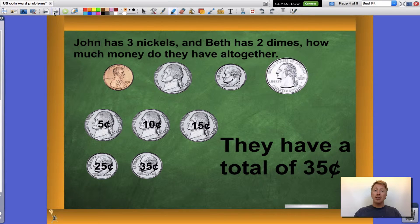So let's see what that would look like. If John has three nickels at five cents each, I have five, ten, fifteen, and when I add those to Beth's two dimes, I have twenty five, thirty five. Altogether John and Beth have thirty five cents.